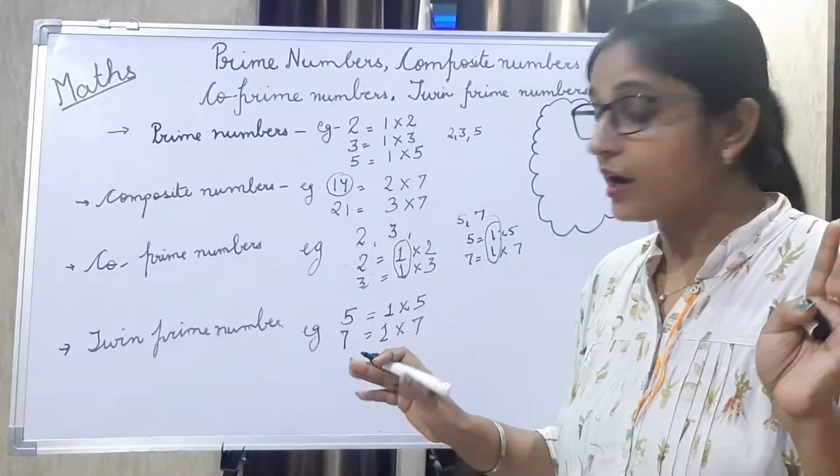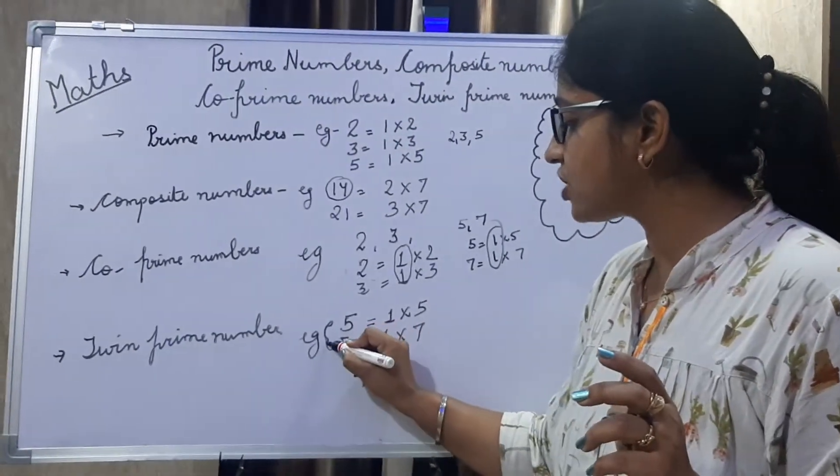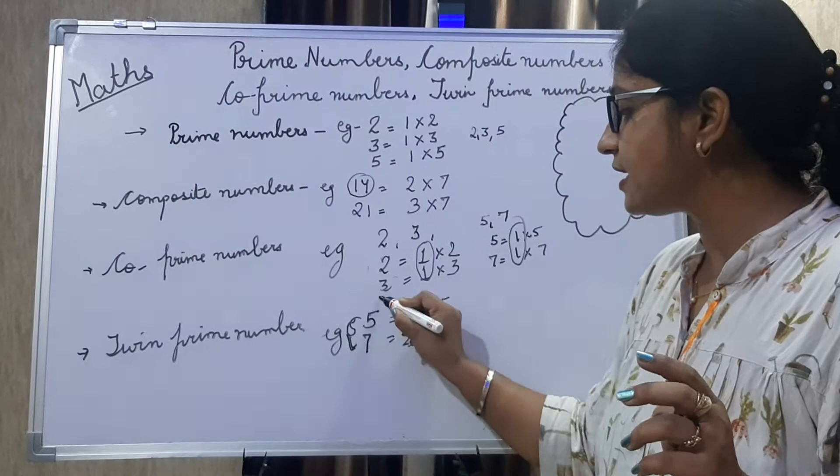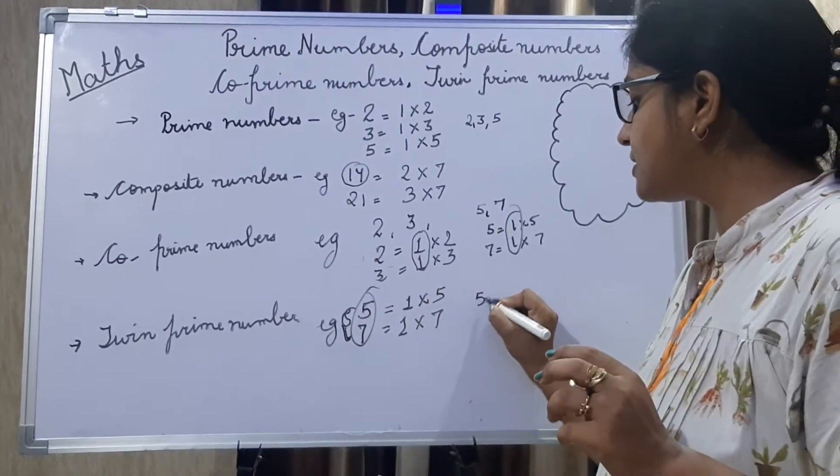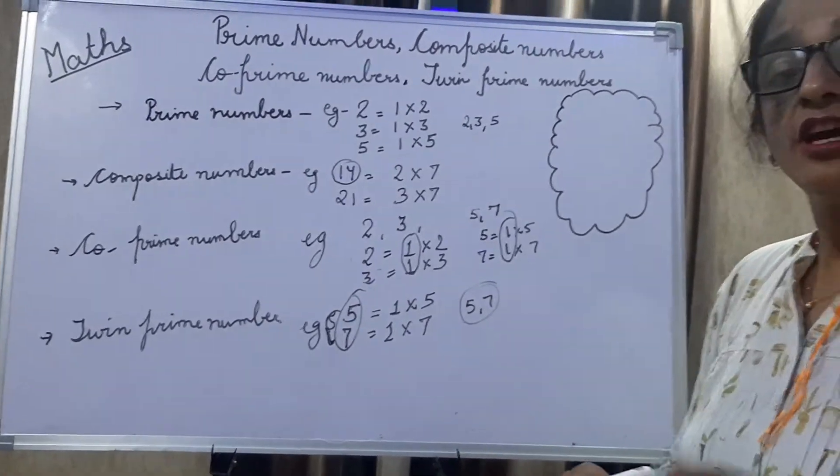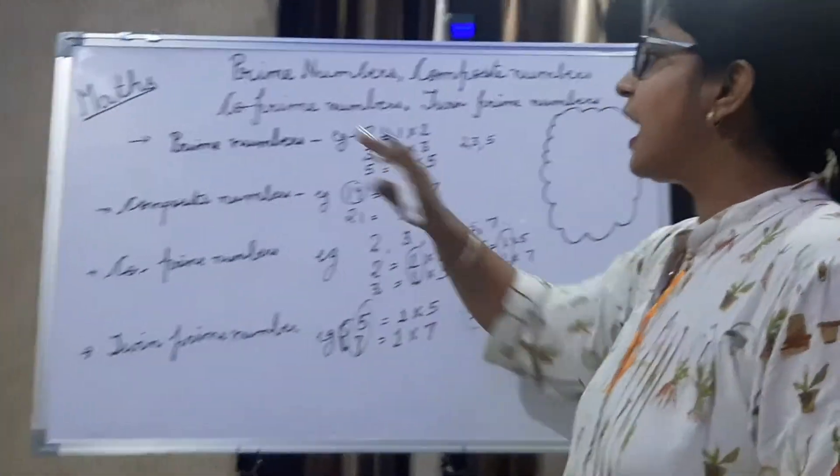Five and seven is confirmed. But the difference between these prime numbers is two. This is a pair of twin prime numbers.